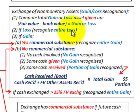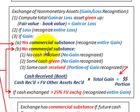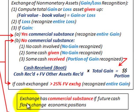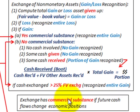Number two, if there's any loss, you recognize the entire loss immediately. Number three, if there's any gain, you determine if there is commercial substance or if there isn't. Commercial substance means the exchange has changed future cash flows — the economic position. We're going to look at both cases here.